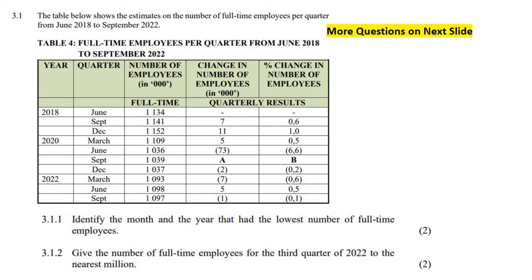The table below shows the estimates on the number of full-time employees per quarter from June 2018 to September 2022. So we've got 2018 with June, September, December, then 2020 with March and June, and so on. They're showing us different years and months, and then the number of employees in thousands — so 1,134 would actually be 1,134,000. Then it shows the change in number of employees in thousands, and then the percentage change.